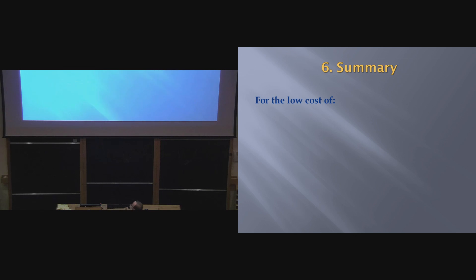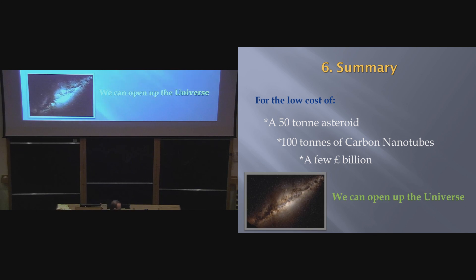So, conclusion, all you need to give me and my crazy team of mad scientists is a 50-ton asteroid, 100 tonnes of carbon nanotubes, and, I don't know, give me about £8 billion or so and I should be able to do it. And in exchange, we can open up our solar system and eventually the universe to human exploration. And I think the best way that summarizes this feeling was said by Carl Sagan, a still more glorious dawn awaits, not a sunrise but a galaxy rise, a morning filled with 400 billion suns, the rising of the Milky Way. Thank you.